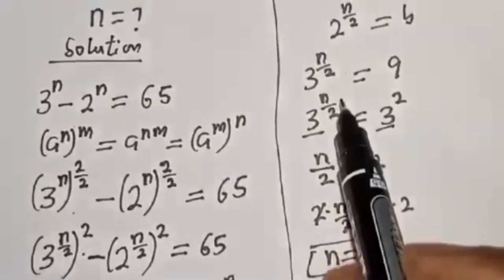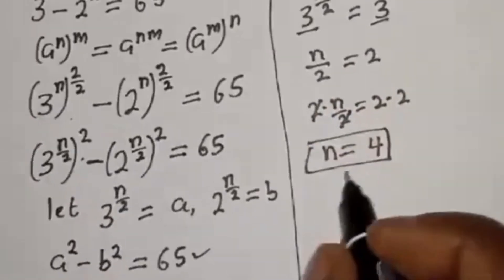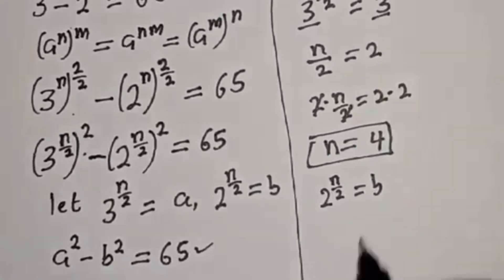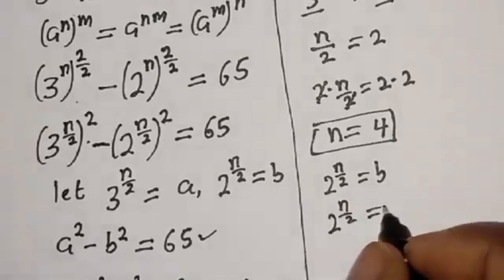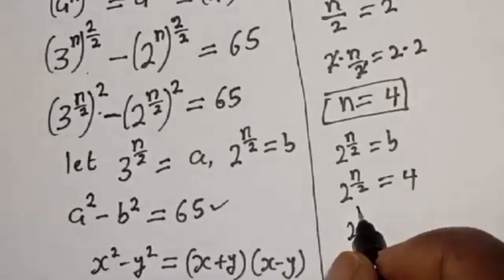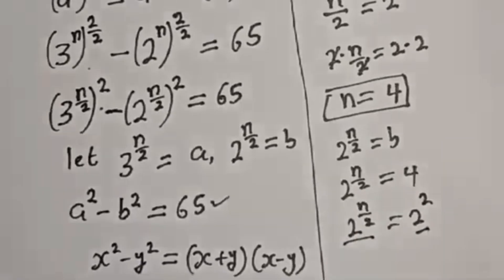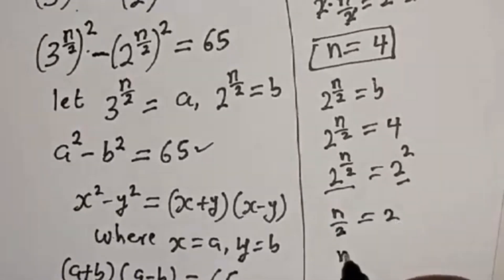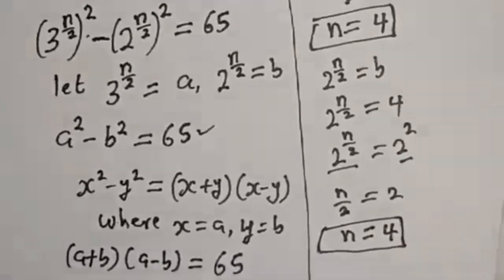Let's also check using b. We have 2 raised to power n over 2 equals b, and b equals 4. So 2 raised to power n over 2 equals 4, which equals 2 squared. Using the same base rule, n over 2 equals 2, so n equals 4 by cross multiplication. This confirms that the value of n is correct.